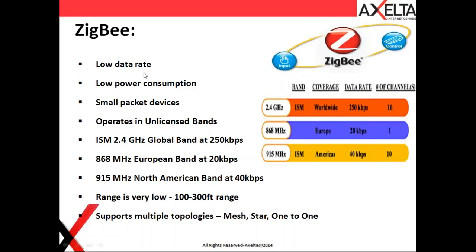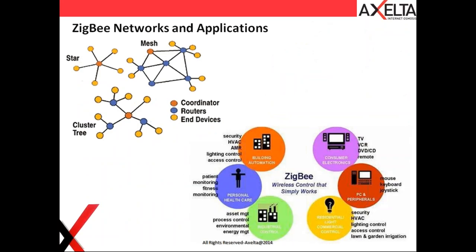Zigbee works in the ISM band at 2.4GHz worldwide, with a maximum data rate of only 250kbps — not Mbps like when you're browsing. The range between two Zigbee nodes is 100 to 300 feet, or about 10 to 30 meters indoors, and up to 100 meters outdoors. One of the major advantages of Zigbee is that it can form a mesh topology. Unlike Wi-Fi's star topology — where all devices must be in range of one router — Zigbee supports mesh, tree, and star topologies.